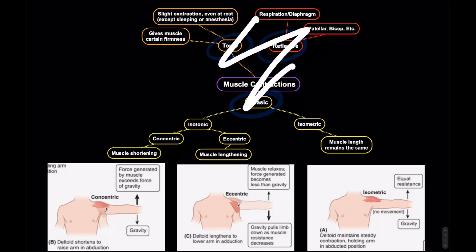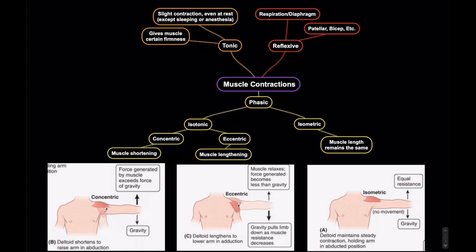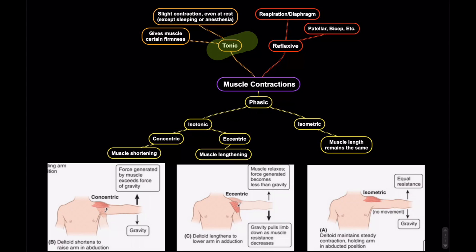For the purposes of Comlex or osteopathic medicine, a lot of times they will ask you about phasic contractions. But just so we're complete, let's talk quickly about the other two. Tonic contractions basically means that a lot of your muscles are always slightly contracted. There's never a time, if you're awake and functioning normally, that you're completely uncontracted — there's always some slight contraction that gives your muscles a certain amount of firmness. The only time you're not tonically contracted is if you're asleep or under general anesthesia.